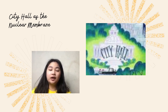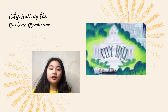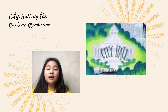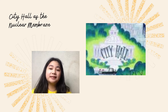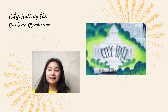Then, the city hall. This represents the nuclear membrane in a cell. The nuclear membrane serves to separate the chromosomes from the rest of the cell. In this case, the chromosome is the mayor, who is inside the city hall. The city hall serves to separate the mayor from the rest of the citizens in the city.